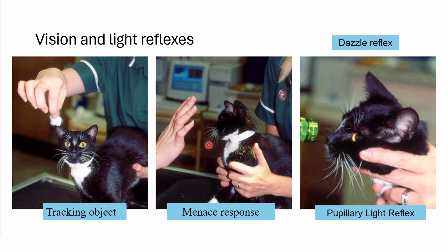The menace response involves a lot of the nervous system — we need functional eyes, and we can tell from this picture that this animal is menaced by the hand coming towards it, shown by its posture, the position of the whiskers, and the cat backing away. When menacing a cat, it's important not to use a whole hand, as that can create a wave of air and stimulate the whiskers via trigeminal sensation. A finger is usually best for cats.